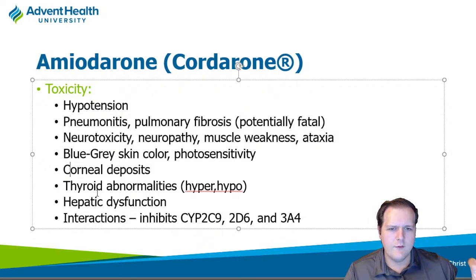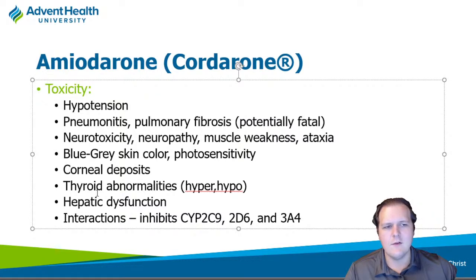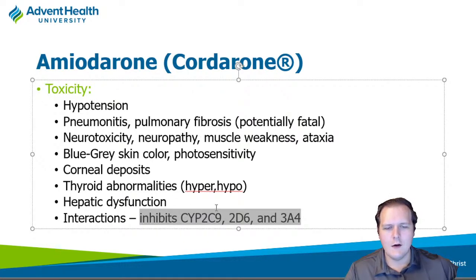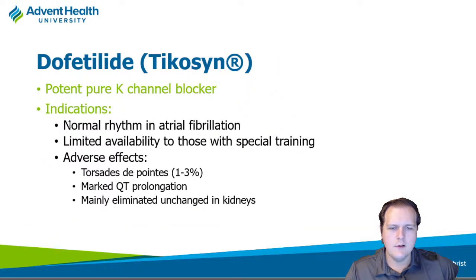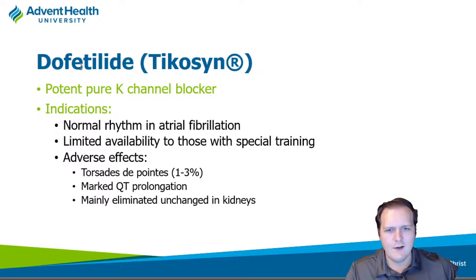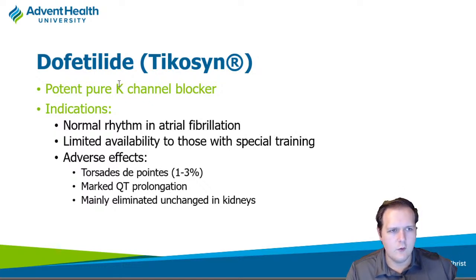A cleaner class 3 agent is dofetilide — or tikosyn. This is a pure potassium channel blocker with no ancillary actions, so it has a cleaner side effect profile — no pulmonary fibrosis, no thyroid effects. It's mainly used for chronic management of AFib for rhythm control. However, it requires a REMS program — similar to isotretinoin — meaning providers need special certification, just as with prescribing isotretinoin. This is to ensure only trained providers, such as cardiologists, are prescribing it.